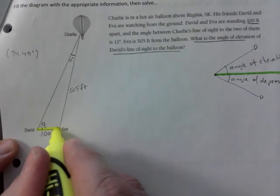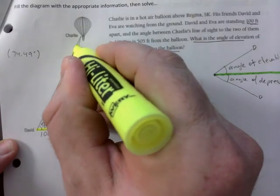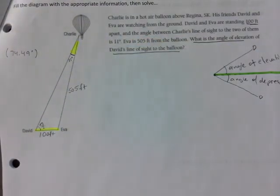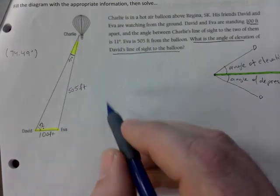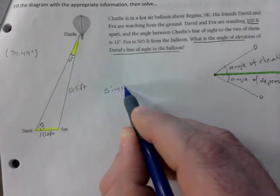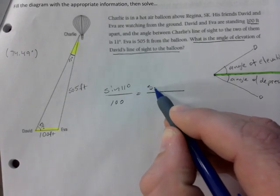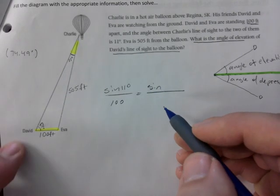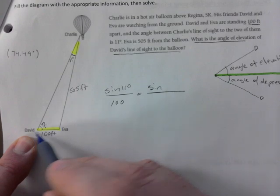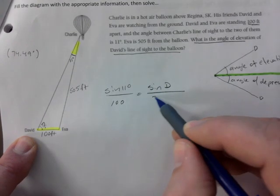This is the 11 right there, and this is a bit of a tough one. So this angle right here pairs up with 100 feet, so you know it's sine law, right?